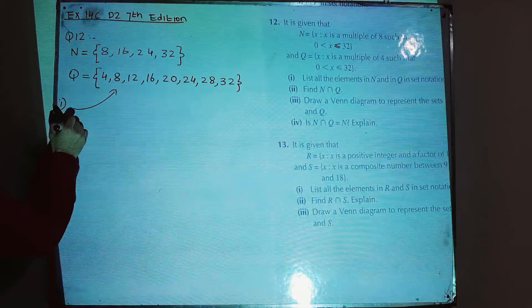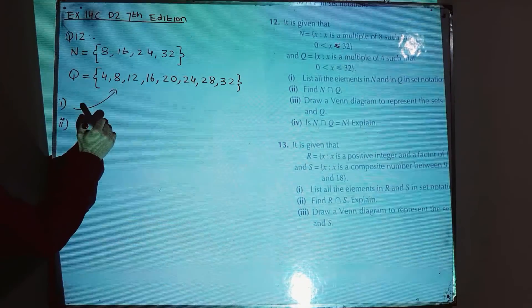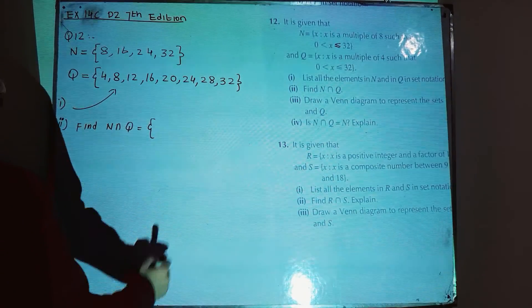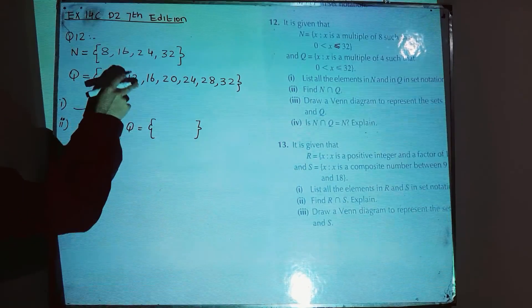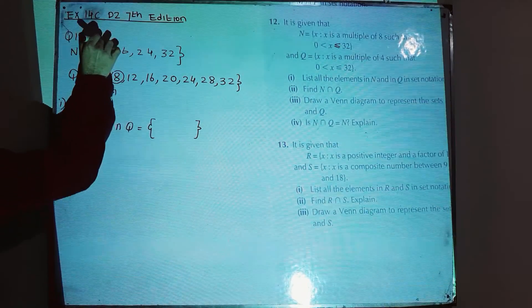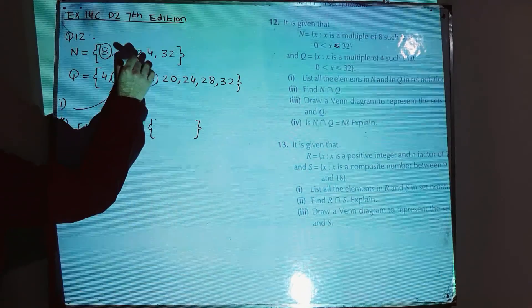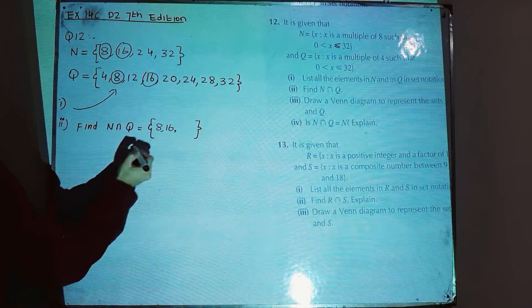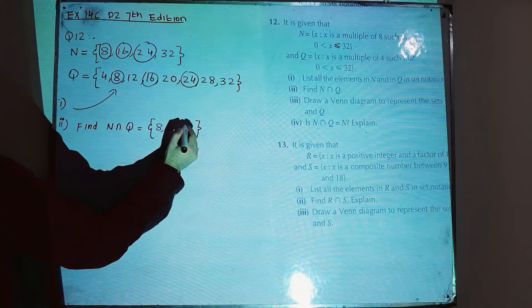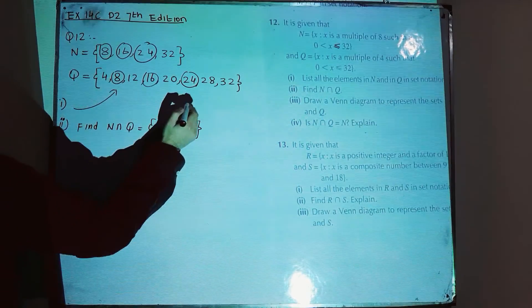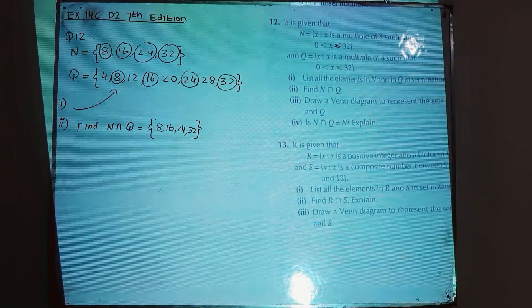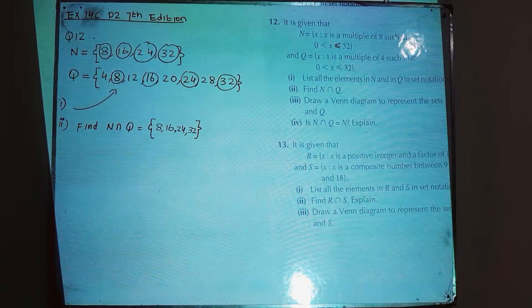Part 2: find N intersection Q. N intersection Q means the elements present in both sets. Looking at both sets, the common elements are 8, 16, 24, and 32. So N intersection Q = {8, 16, 24, 32}.